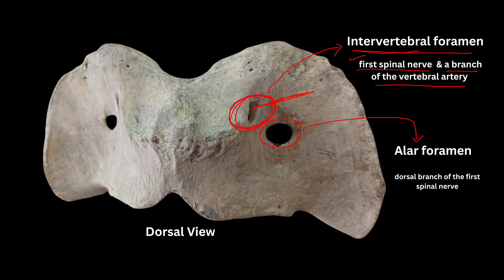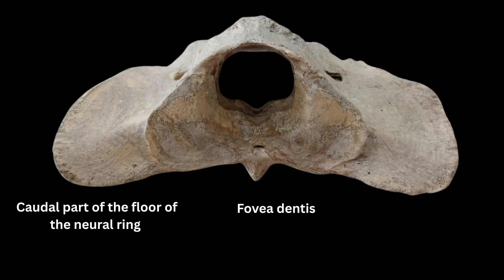The foramen present somewhat laterally is called the alar foramen. It is for the passage of the dorsal branch of the first spinal nerve. The first spinal nerve gives a dorsal and a ventral branch — the dorsal branch passes through the alar foramen.